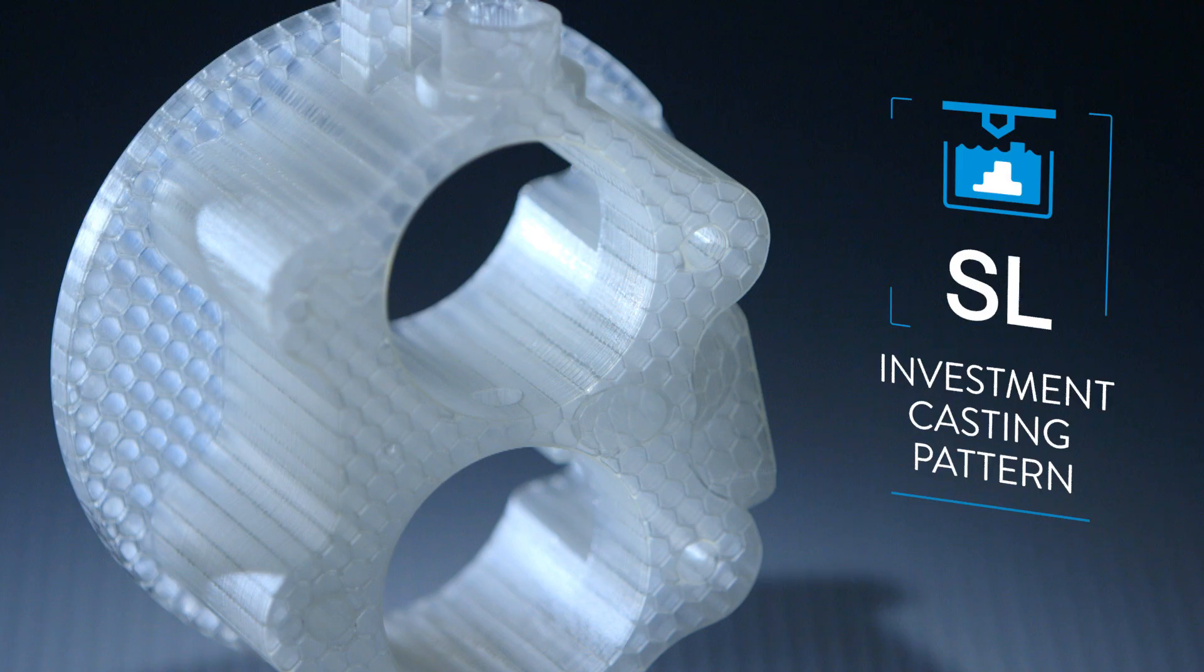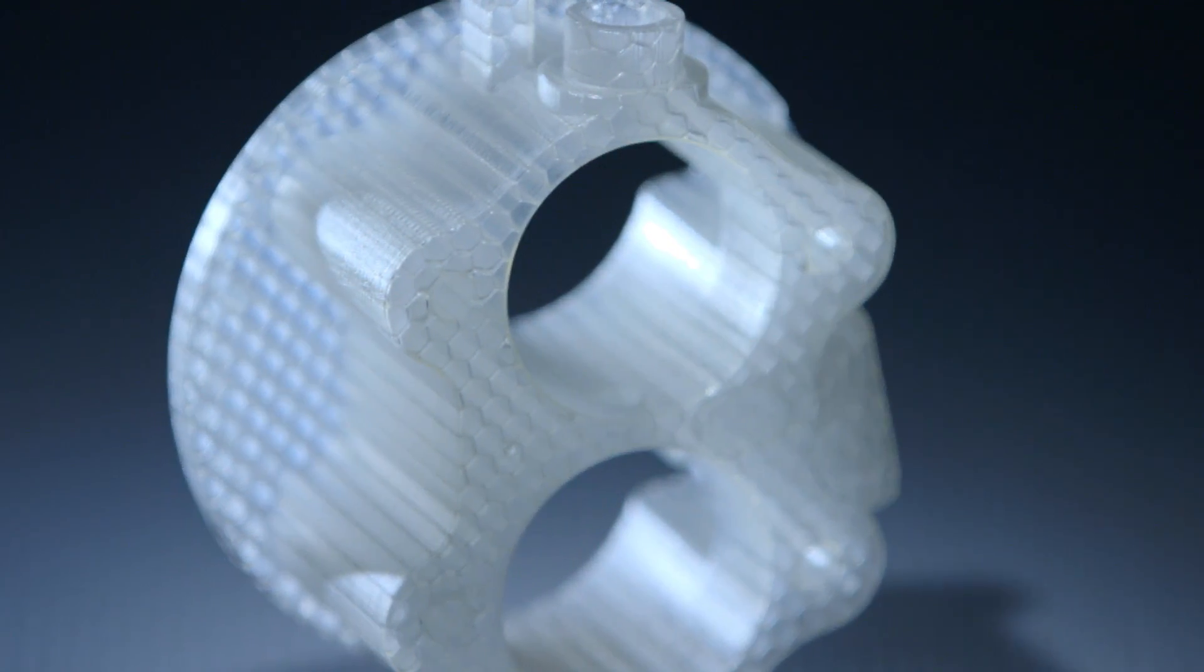SL stands for Stereolithography. You can do extremely intricate parts with it. It is very accurate and very fast. So that's where the first uses of this technology actually came in. People wanted to get prototype parts quickly.